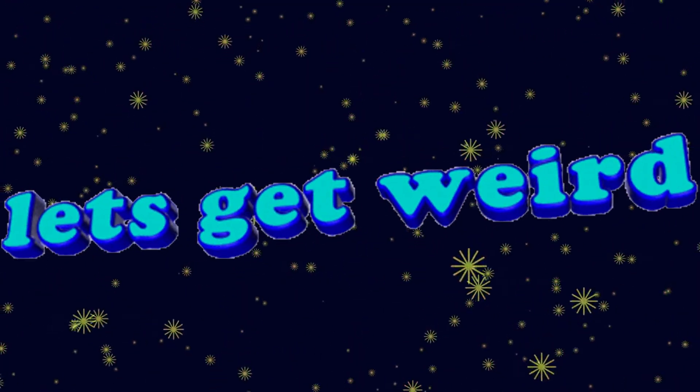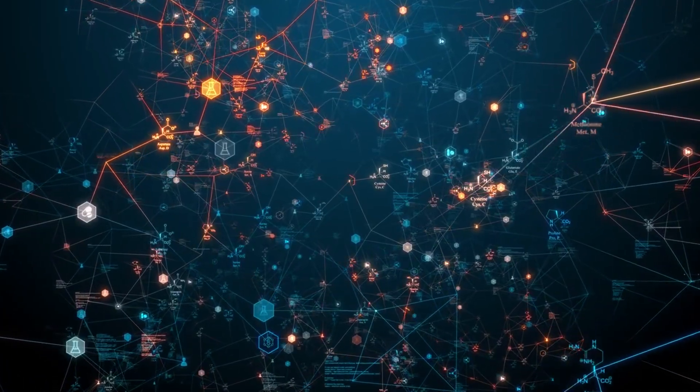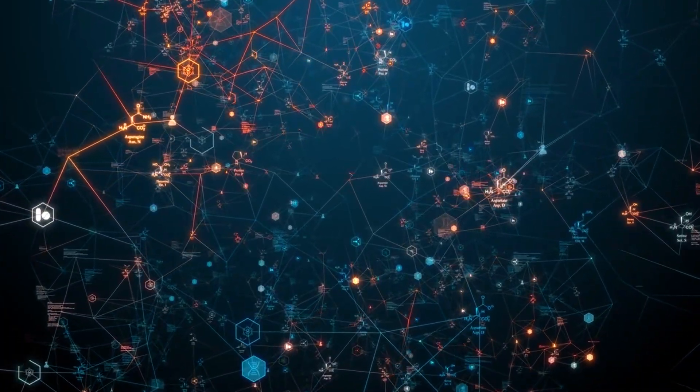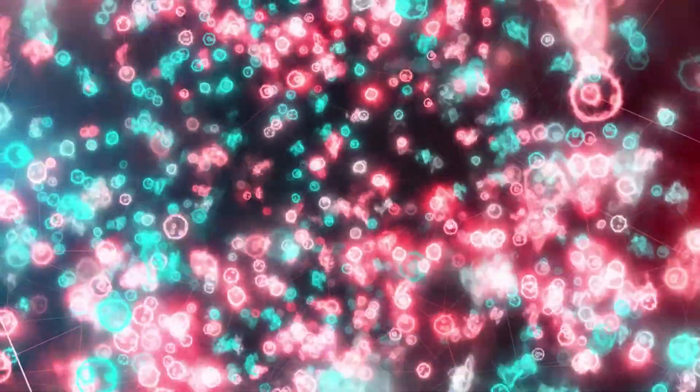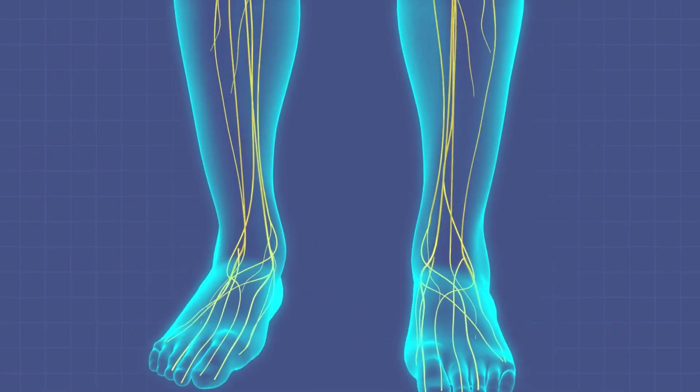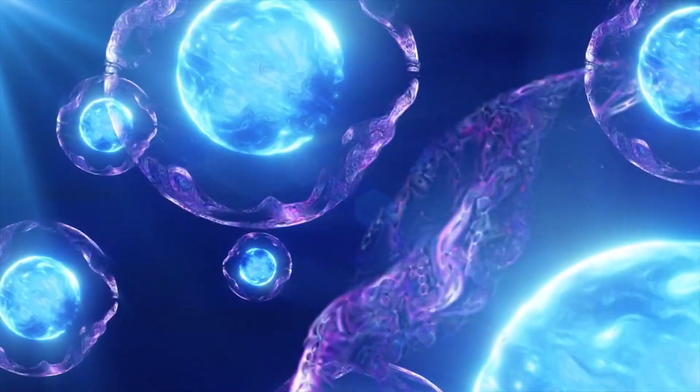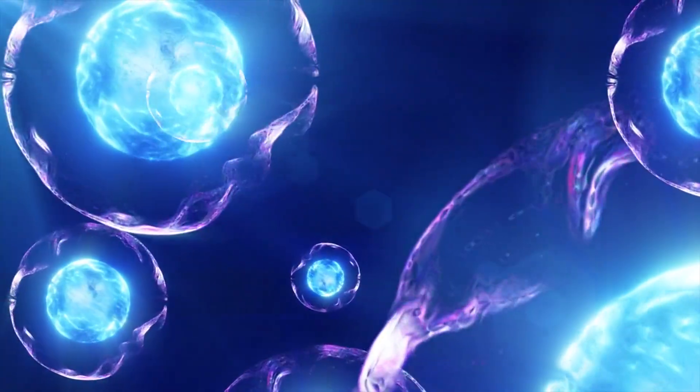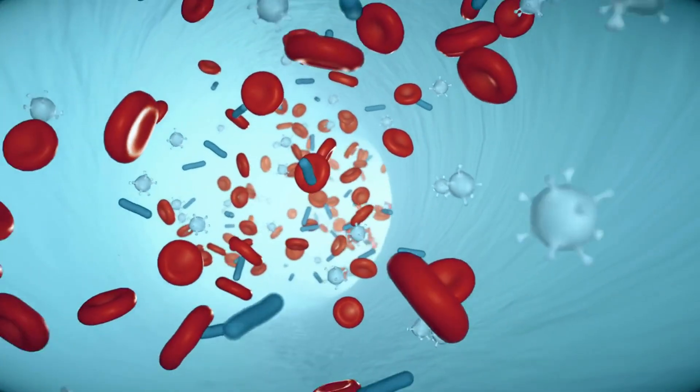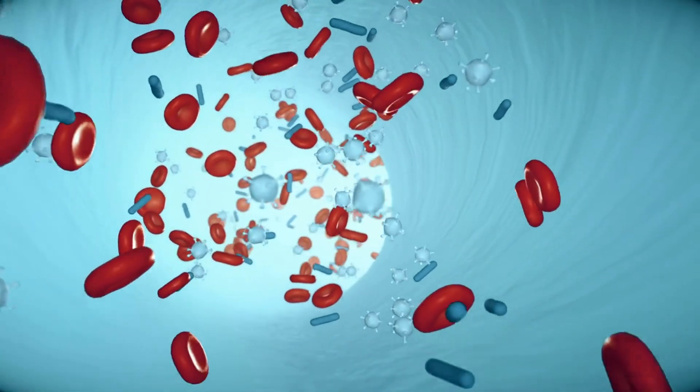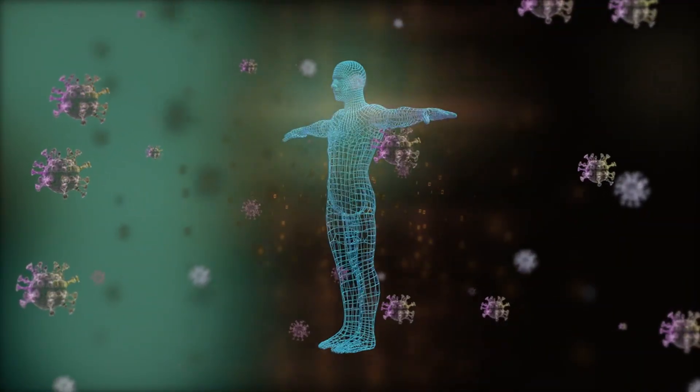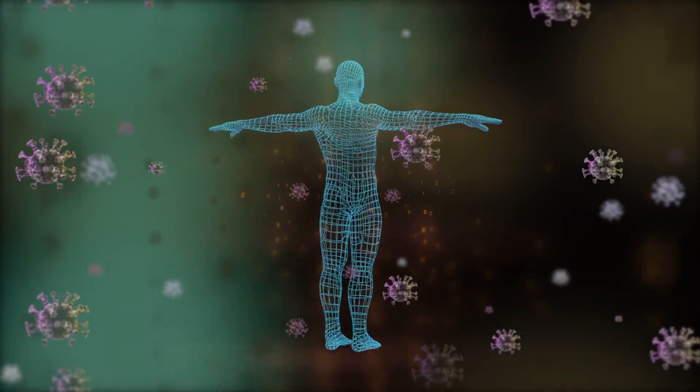But it gets weirder. There are particles passing through your body right now that shouldn't exist. They're called neutrinos. Trillions of them are flying through your skin, organs, and bones every second. They're created in the heart of stars, nuclear reactions, and even during the Big Bang itself. And yet they don't interact with anything. They're like cosmic ghosts, invisible passengers just drifting through us. We only know they're there because incredibly sensitive machines have caught a few. Barely.